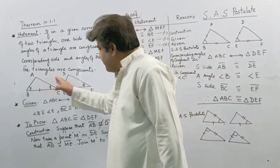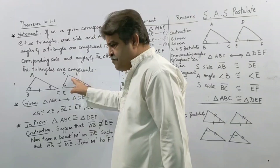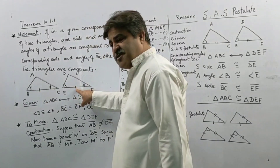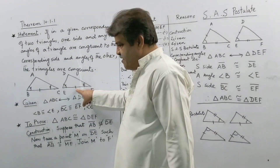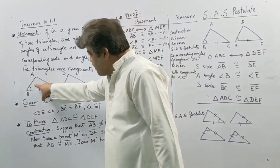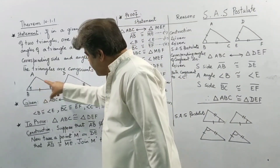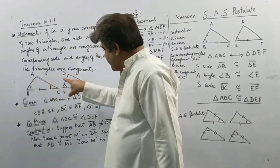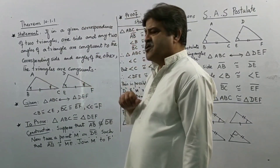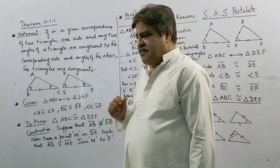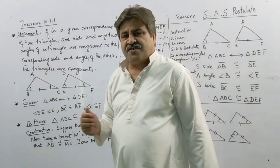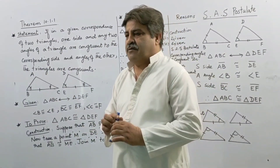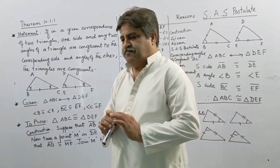These are two triangles and this is one side — the corresponding side is here. This is the first angle and the corresponding angle is here, and this is the second angle and the corresponding angle is there. All three of these are congruent, therefore the triangles must be congruent.